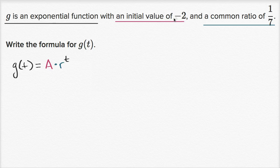And they tell us what the initial value is. It's negative two. So this right over here is negative two. And we know that the common ratio is one-seventh. So this is one-seventh.